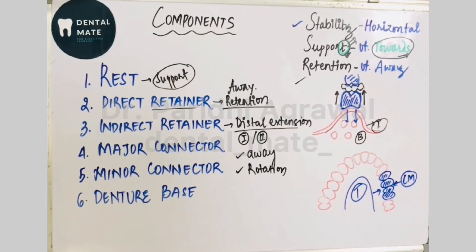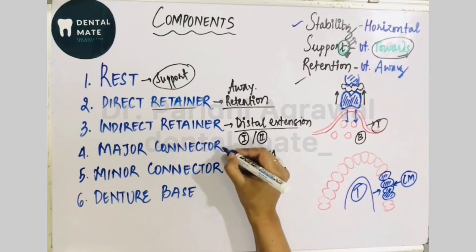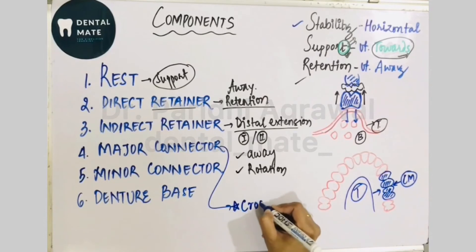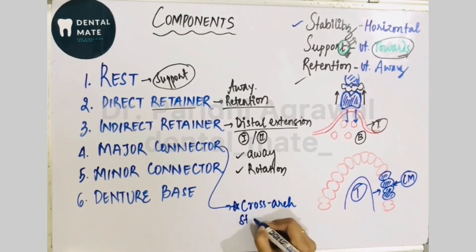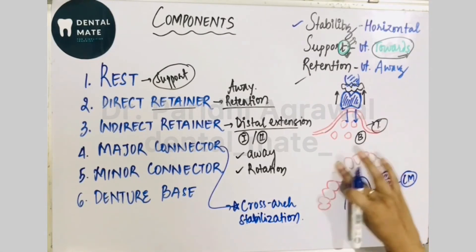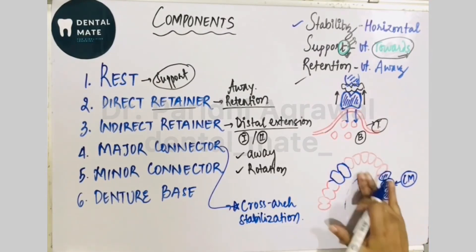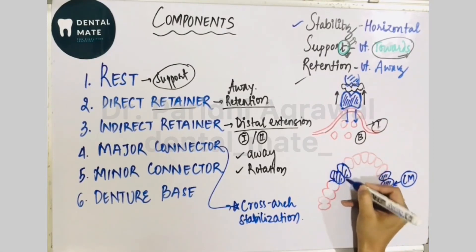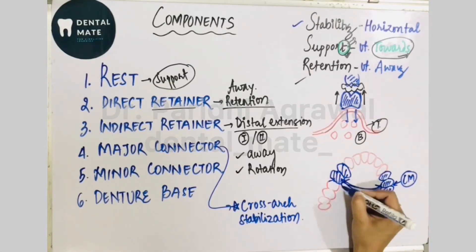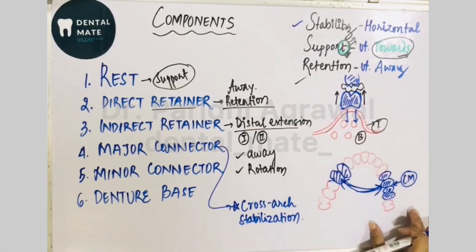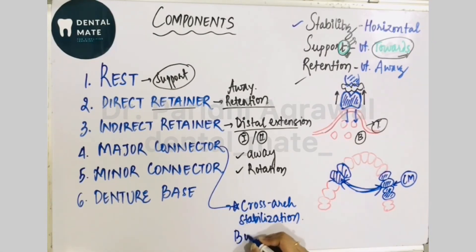The major connector provides cross-arch stabilization. For example, if we have premolars to replace on both sides of the arch, the major connector connects the prosthesis components on one side of the arch to the other. It joins the components of one side to the opposite side, providing cross-arch stabilization and adding bulk to the prosthesis.